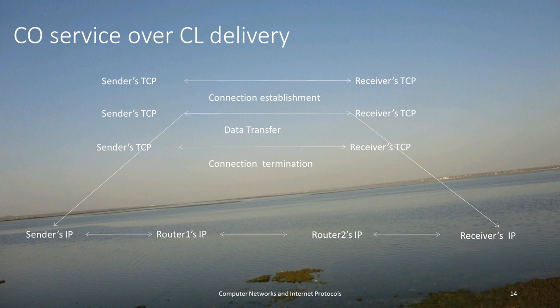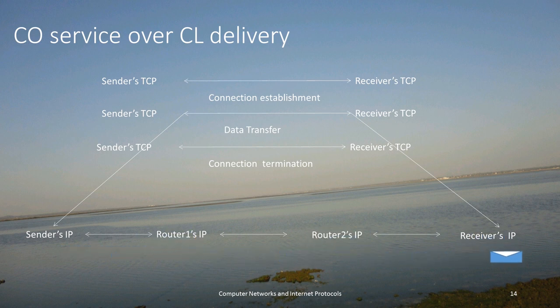We have a sender and a receiver, and assuming there are two routers in between — it starts sending things in the form of packets. The packet is sent, goes to router 1, router 2, and then the receiver. In this process, sender sends to router 1, router 1 to router 2, and router 2 to receiver — all without establishing any form of connection. Though TCP establishes a connection, the IP running beneath does not establish a connection and delivers everything in a connectionless model. That is why this is called connection-oriented service over connectionless delivery.